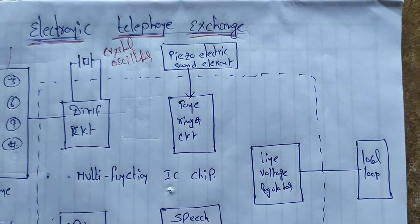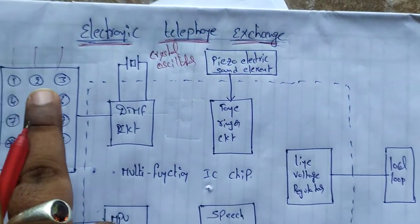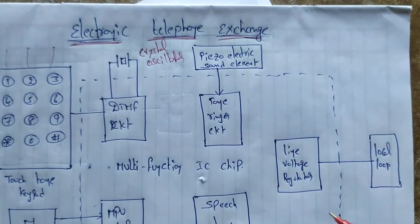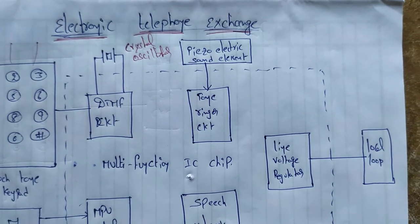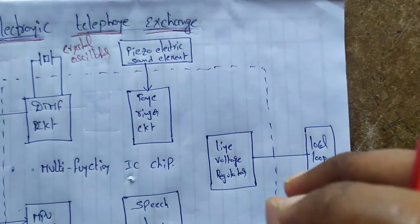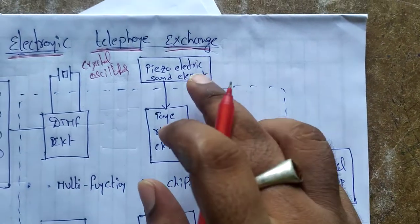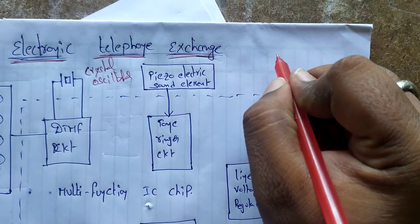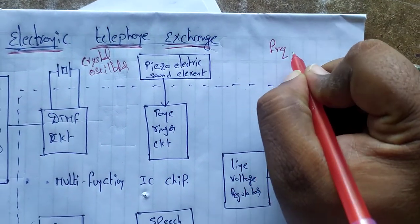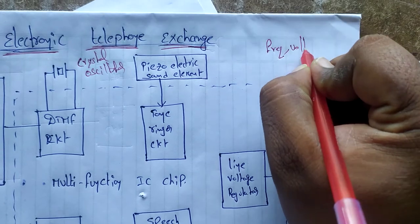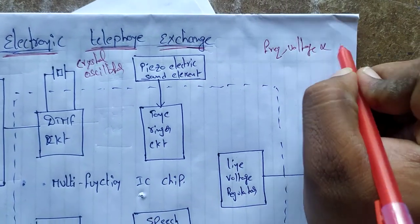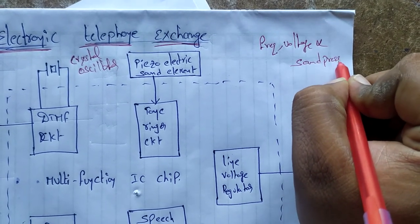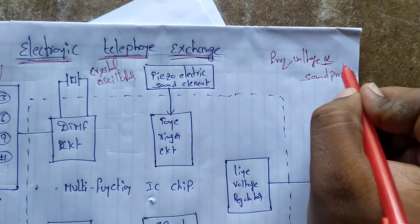The piezoelectric effect involves pressure and frequency. When you apply pressure and voltage, a voltage is generated. The frequency and voltage are directly proportional to the sound produced.